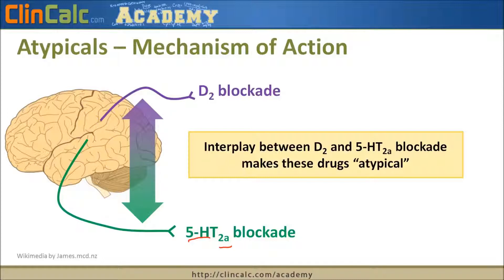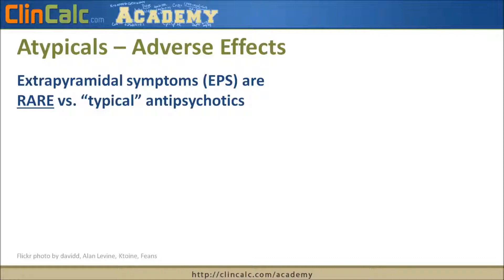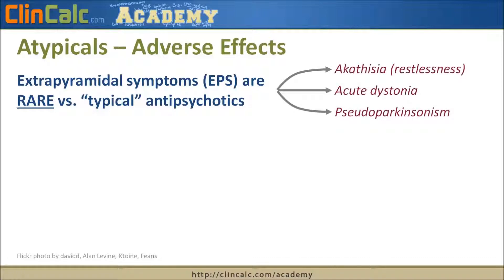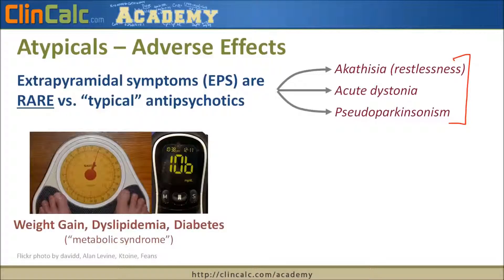The biggest difference between typical antipsychotics like haloperidol and our atypicals is that we often don't see extrapyramidal symptoms, or EPS. Those EPS symptoms include akathisia or restlessness, acute dystonia which is a muscle contraction, and pseudo-parkinsonism. We often don't see these adverse effects with atypicals at the rates we would with typicals like haloperidol.